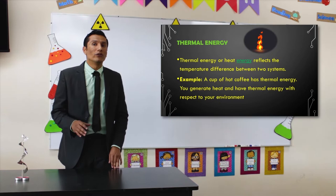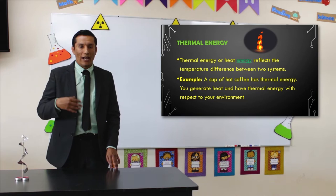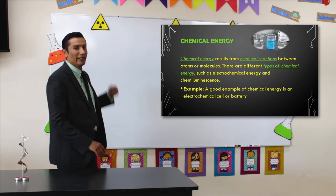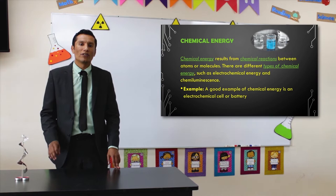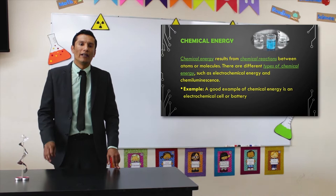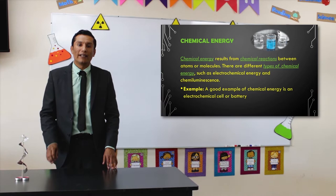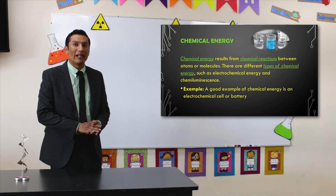Our third energy is chemical energy. Chemical energy results from chemical reactions between atoms and molecules. There are different types, such as electrochemical energy and chemiluminescence energy. A good example of chemical energy is an electrochemical cell or a battery — the batteries we use in our cell phones use chemical energy to make them work.